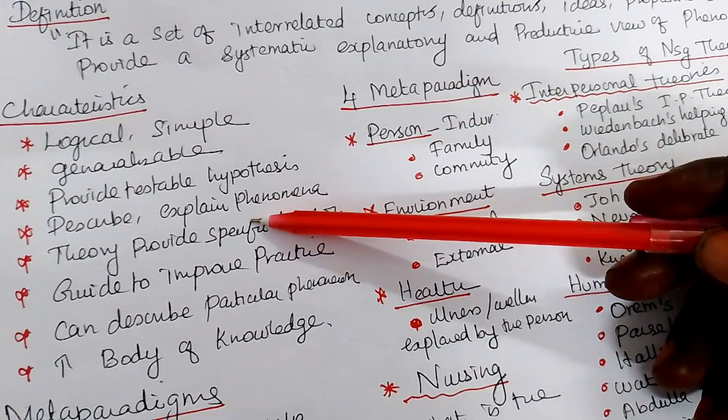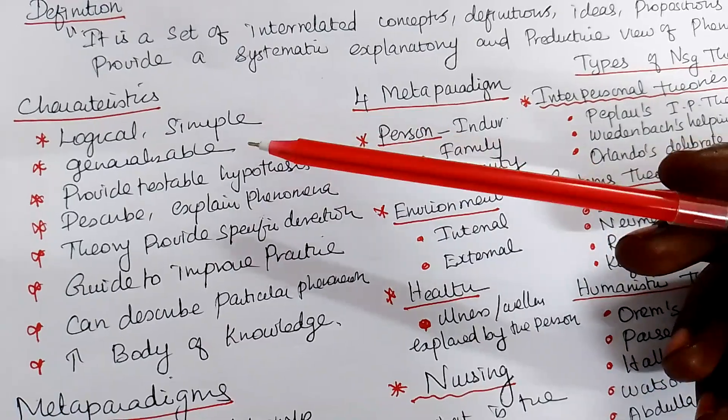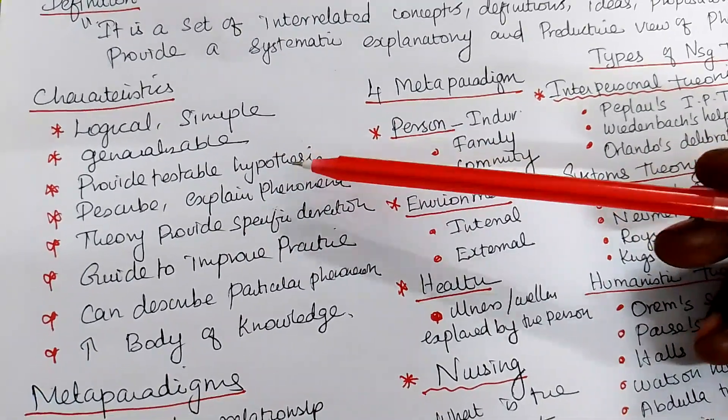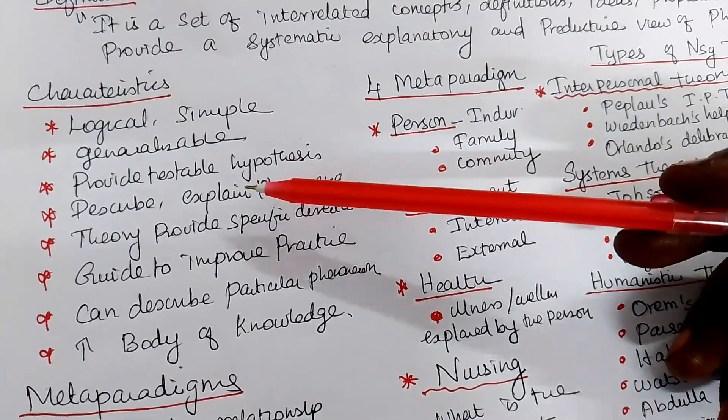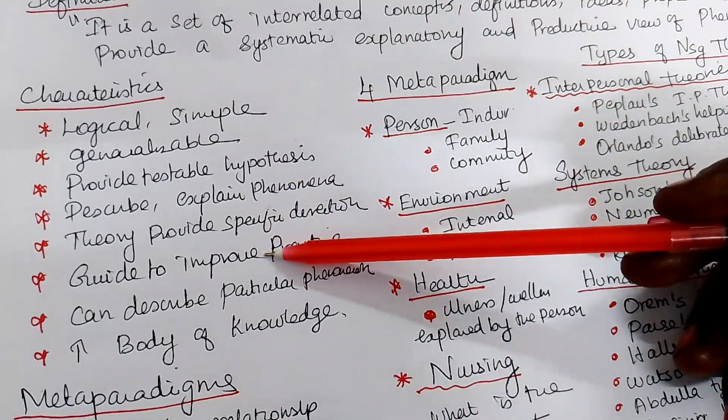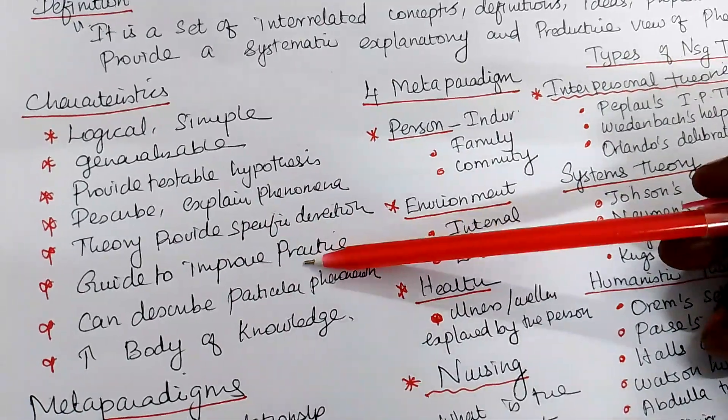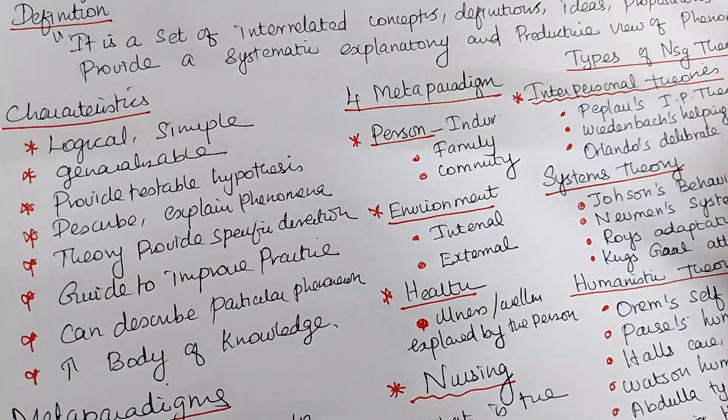What is the characteristics? It should be theoretical, logical, simple, generalizable, provide the testable hypothesis. It should be described, explain the phenomena, theory, provide the specific direction than the conceptual framework. It guide to improve the practice. It can describe the particular phenomena and it will increase the body of knowledge.